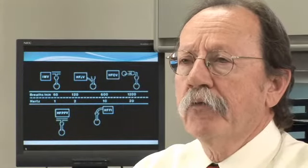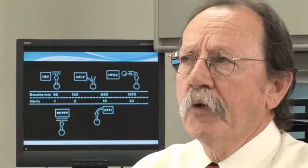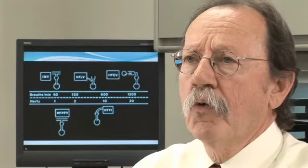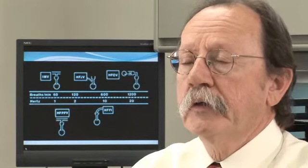The following slide depicts where various ventilators will begin to air trap in a normal lung. Typically, the high-frequency jet ventilator and the flow interrupter air trap at around 600 breaths a minute, 10 hertz, and the oscillator at 20 hertz or 1200 breaths a minute. The oscillator is typically used at 5 to 15 hertz. The jet is typically used at 4 to about 8 hertz, and the flow interrupter typically at 5 to about 10 hertz.